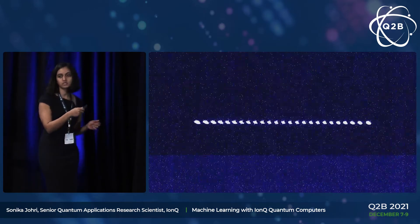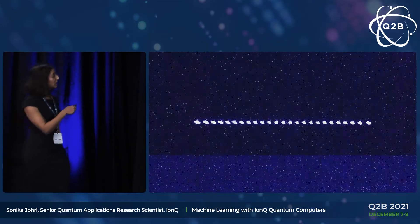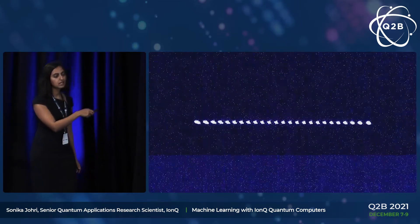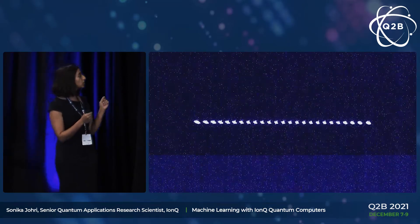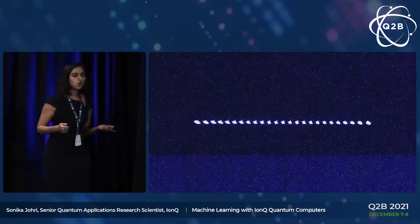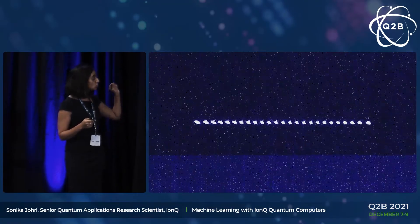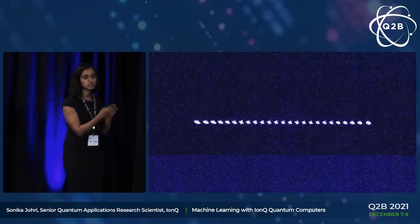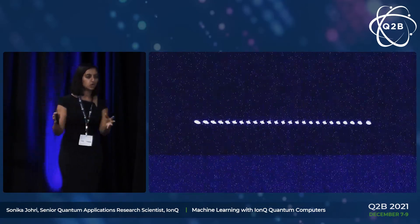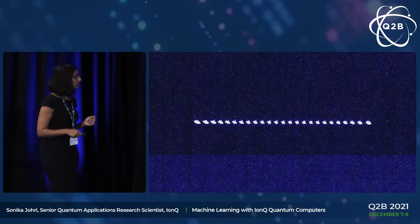Here is a video that one of my colleagues took of 25 ions in a chain. In our current architecture, the ions are read out in a linear array. Despite this, you can perform entanglement gates between any two qubits in this array. This all-to-all connectivity can make all the difference between getting complete noise versus something actually useful for the current generation of quantum computers.